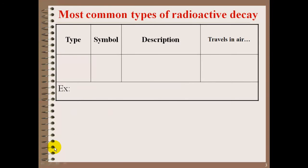Most common types of radioactive decay, there are a few that you need to know. First, there is an alpha decay. Here is the symbol, the Greek letter alpha.